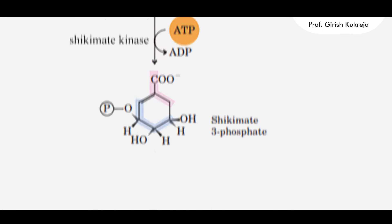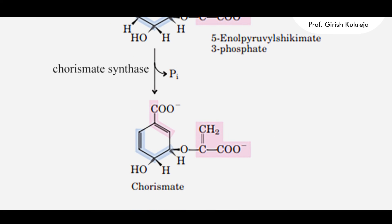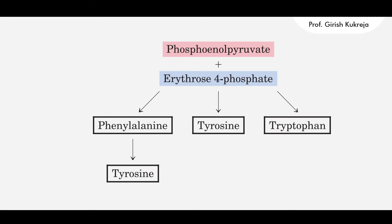Shikimate-3-phosphate undergoes addition of 3 more carbon atoms from phosphoenolpyruvate to form 5-enolpyruvylshikimate-3-phosphate, in a reaction catalyzed by 5-enolpyruvylshikimate-3-phosphate synthase. This is then converted to chorismate by the enzyme chorismate synthase. Thus, chorismate is formed, representing the first branch point for the synthesis of tryptophan, phenylalanine, and tyrosine.